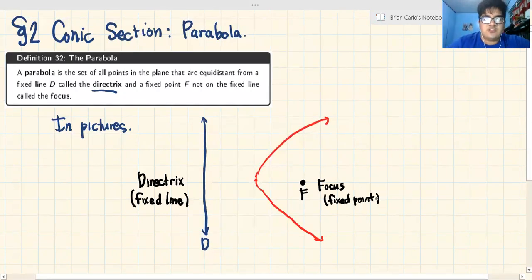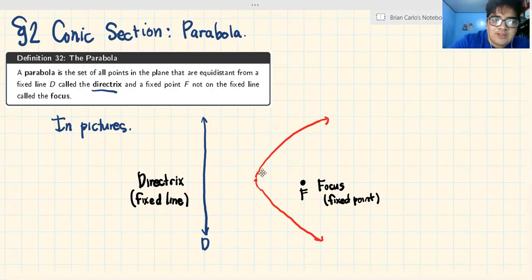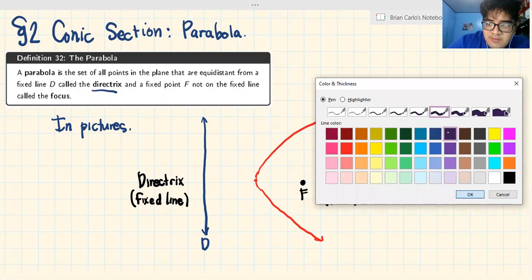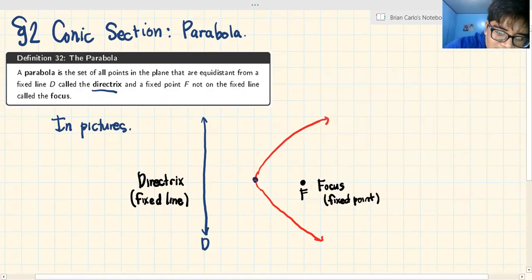What does the definition say? A parabola is a set of all points. This set of all points in red that are equidistant from a fixed point to a fixed line. For example, let's say we have a point along the parabola.